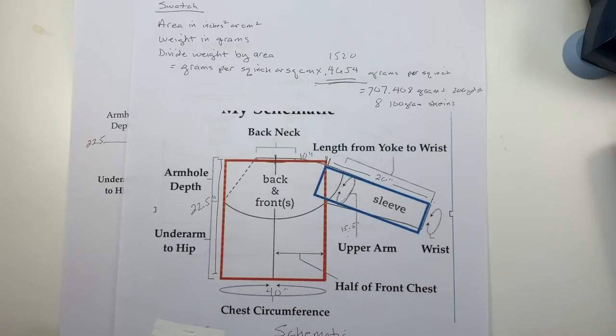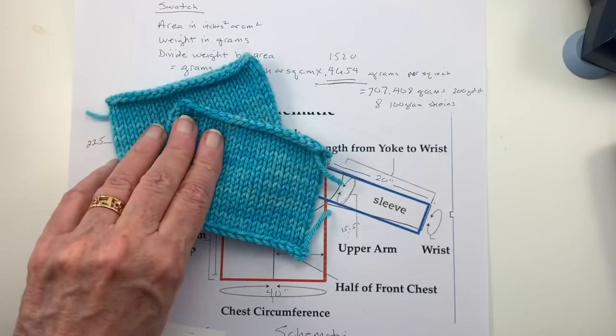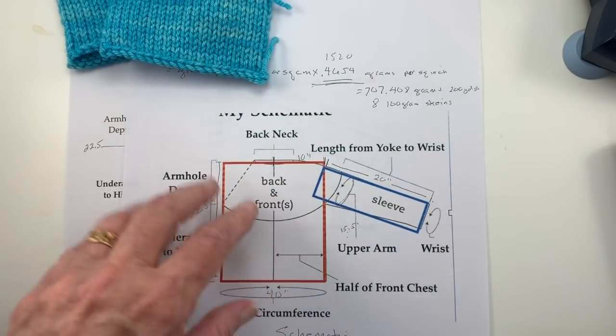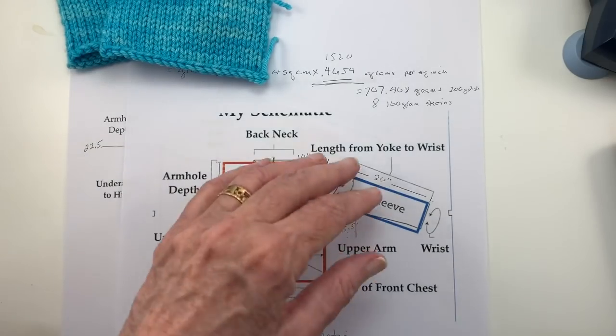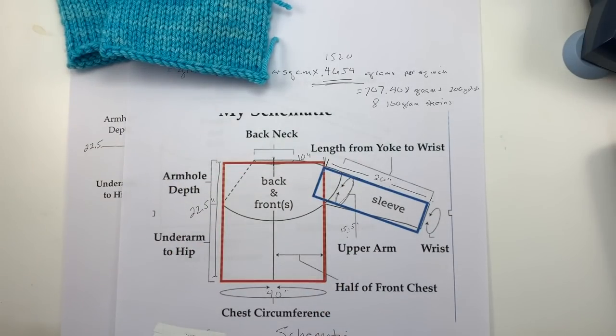This is in conjunction with a knit-along that I'm doing on Ravelry. It's called ITAG YOLK, I-T-A-G, which stands for It Takes a Guild, YOLK. And we're doing a yoke sweater from the ground up. We're starting with a swatch and our schematic. And we're building, each person's building their own sweater from the top down with any design elements that they want, any yarn, weight, from fingering to bulky, any stitch design, and each work will be an individual work of art.